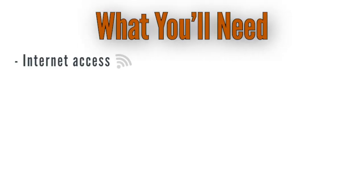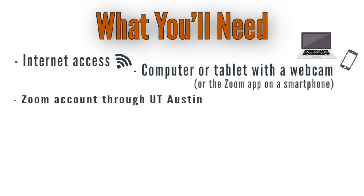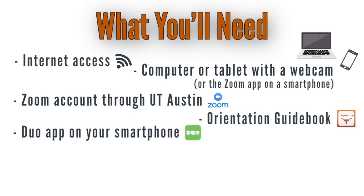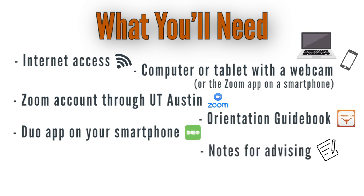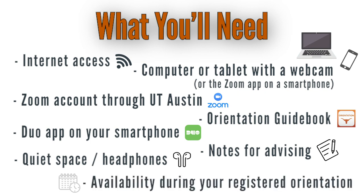What you'll need: internet access; a computer or tablet with a webcam, or the Zoom app on your smartphone; a Zoom account through UT Austin; the orientation guidebook; the Duo app on your smartphone; notes for advising; a quiet space at home and/or earphones; and availability during your registered live orientation experience.